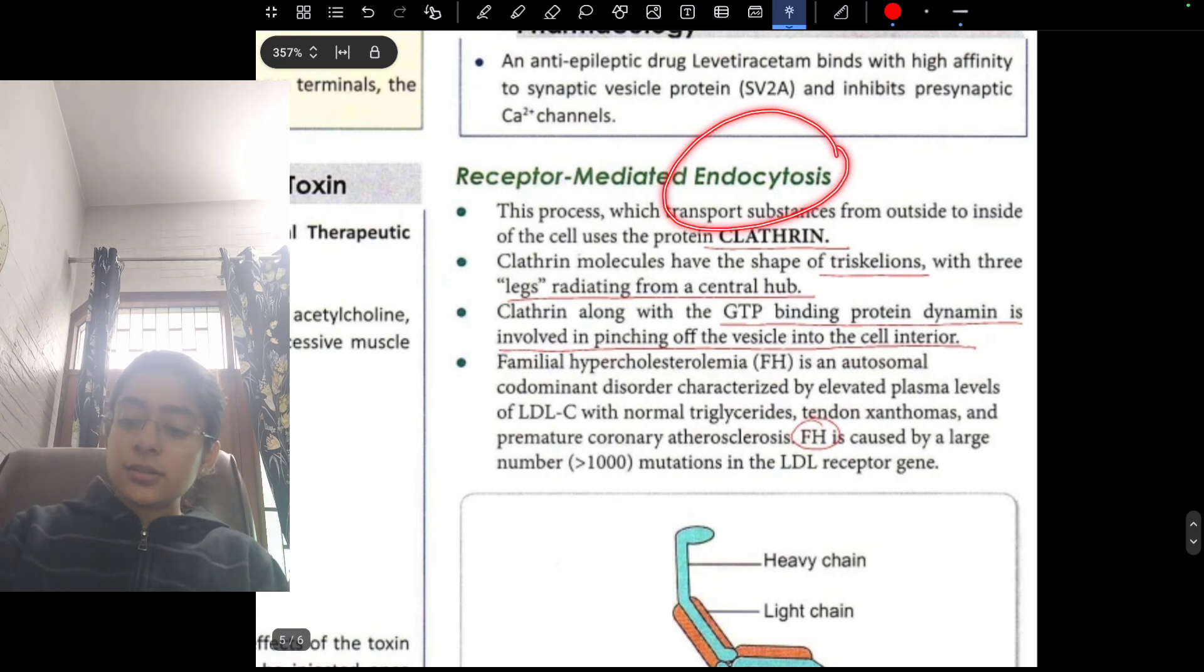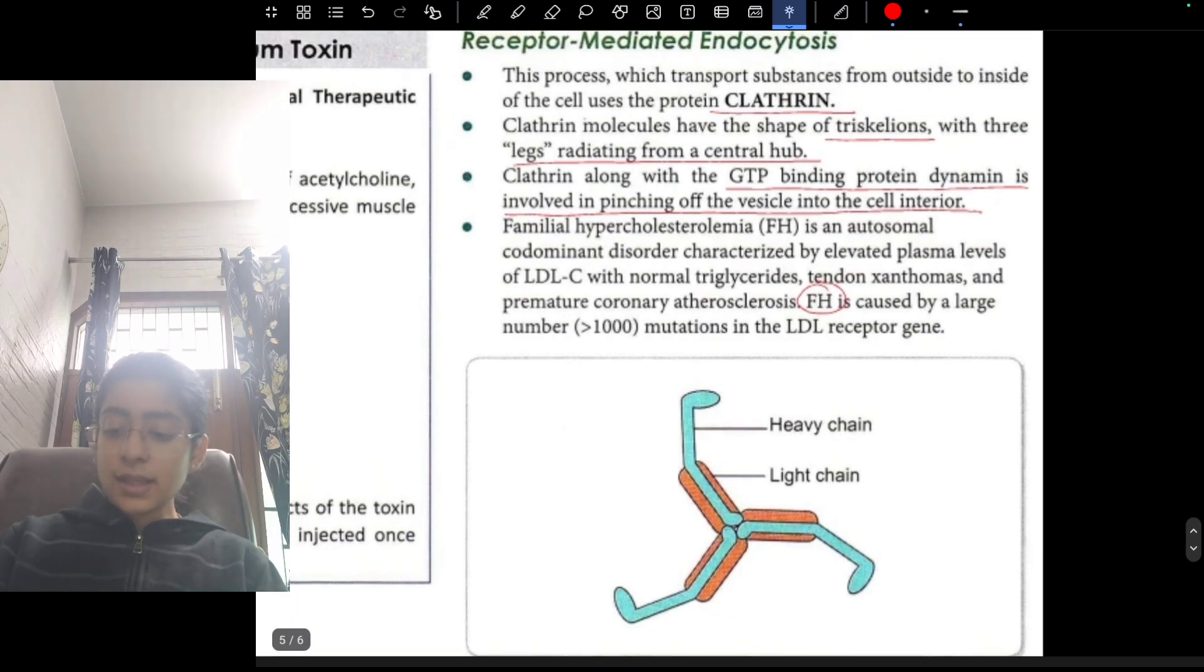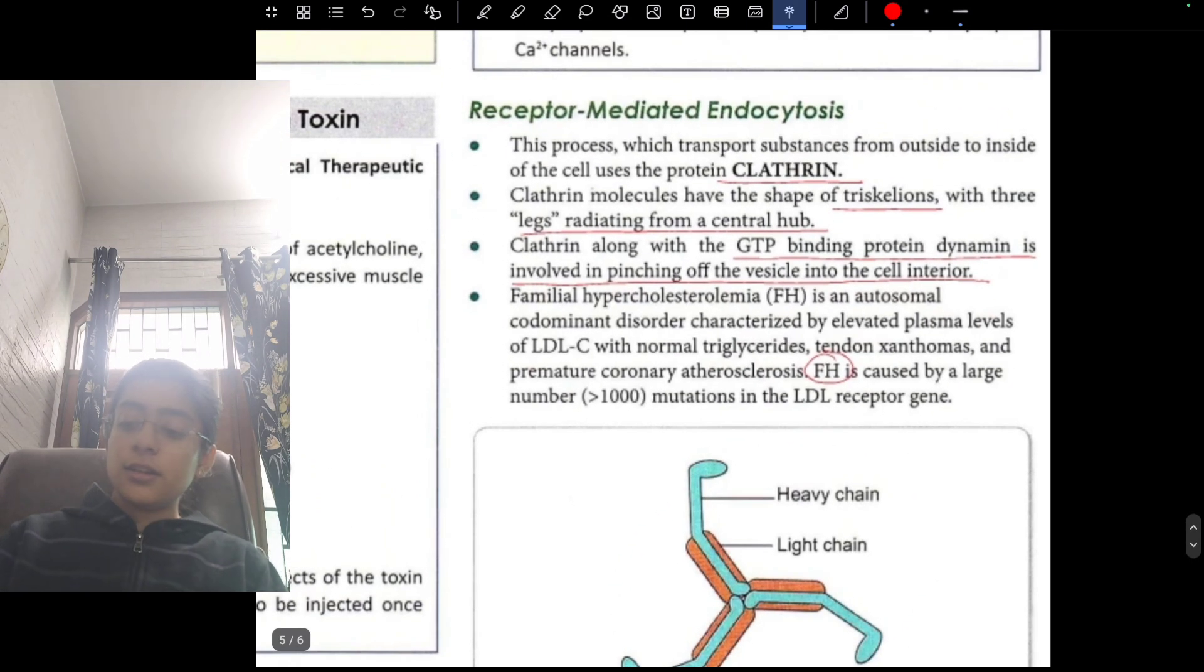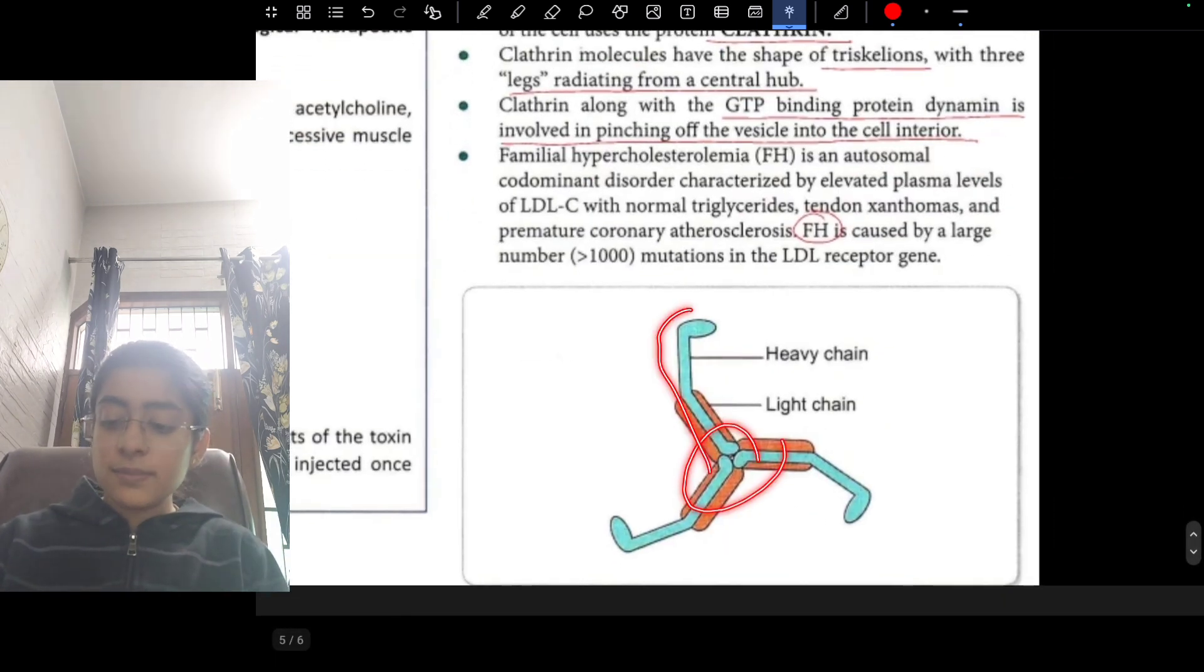Receptor-mediated endocytosis: in lipid metabolism you will learn that clathrin-coated pits are there. This is the structure of the clathrin. It is extra, not needed. Which process transports substances from outside to inside of the cell uses the protein clathrin? Clathrin molecules have the shape of triskelions with three legs radiating from the central hub. Three legs radiating from central hub.